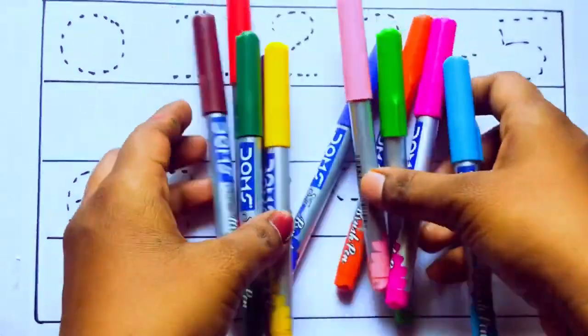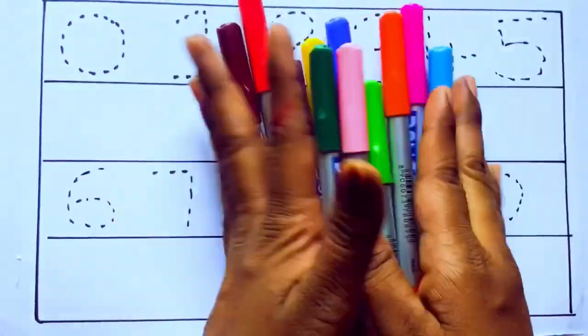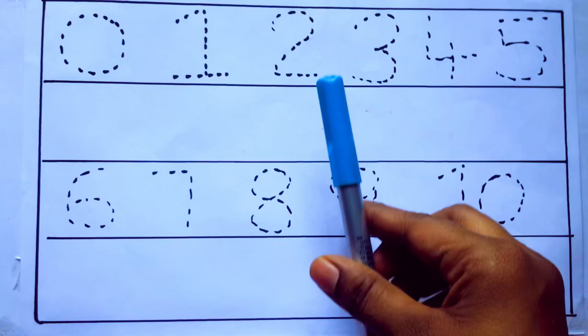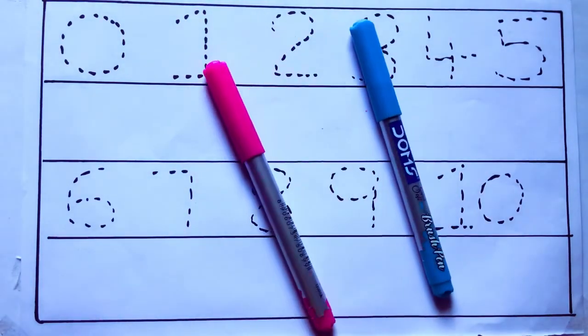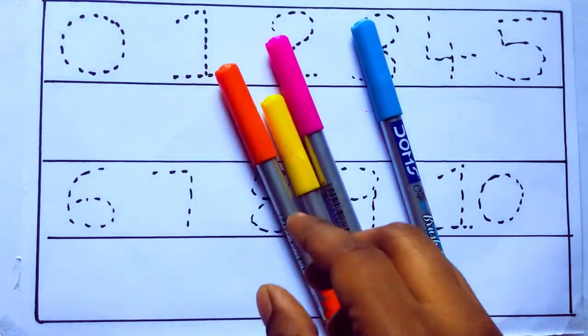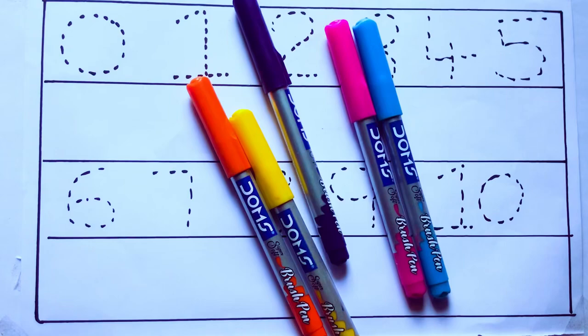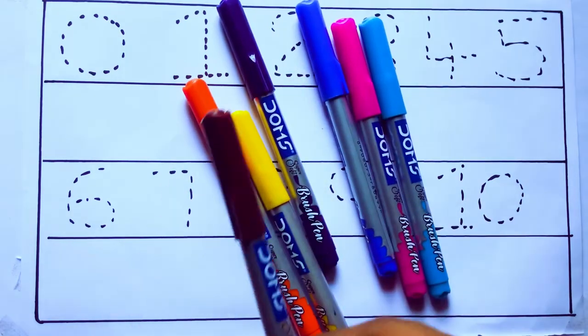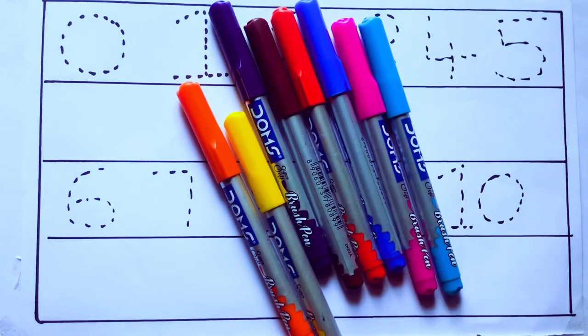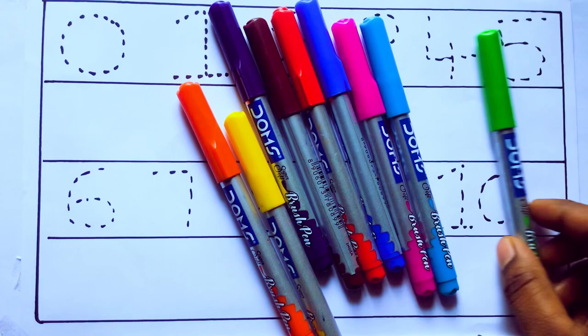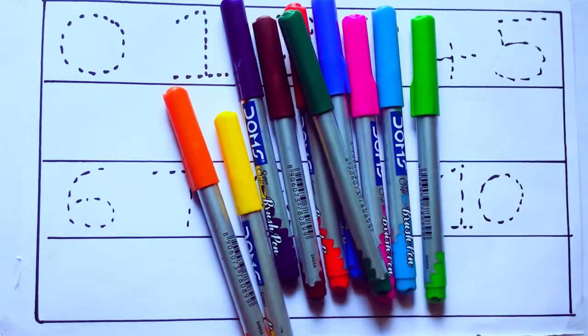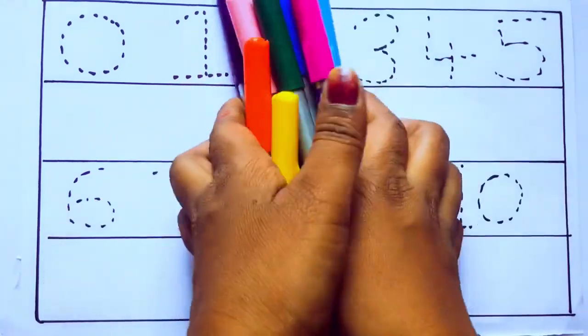Let's learn some colors. These are all the color pencils. Let's learn the names. Sky blue color, pink color, yellow color, orange color, violet color, blue color, brown color, red color, green color, and pink color.